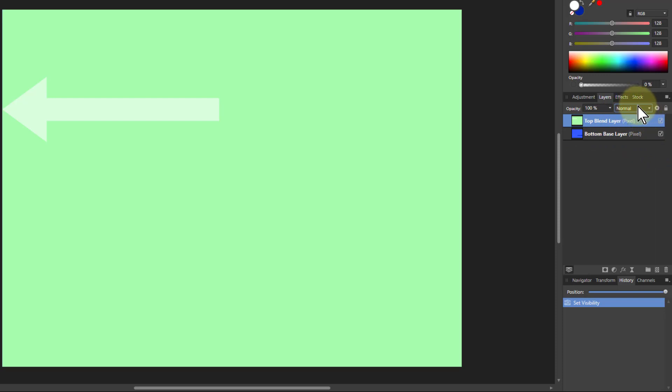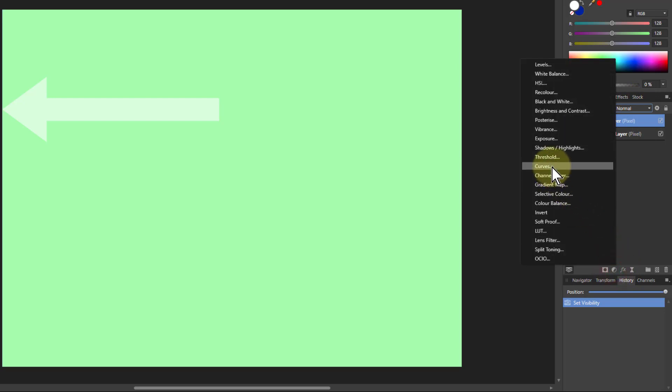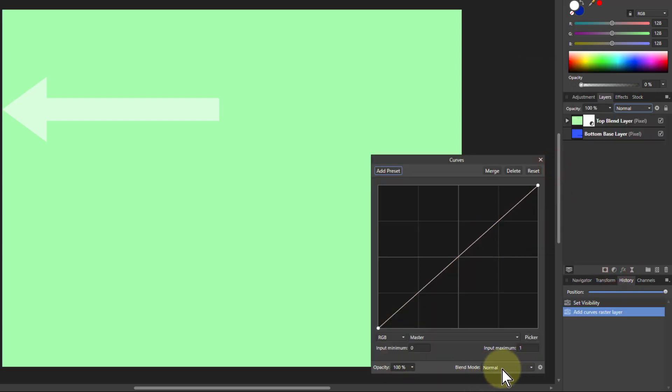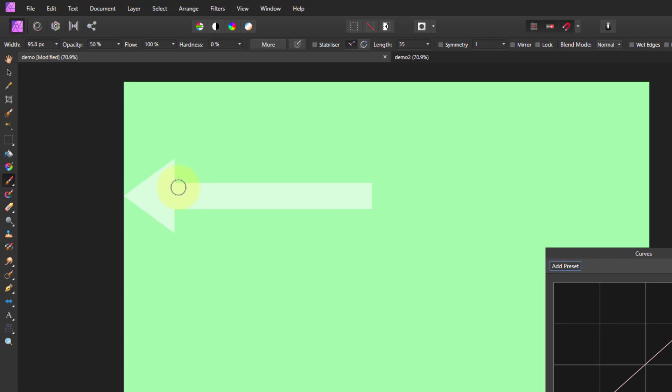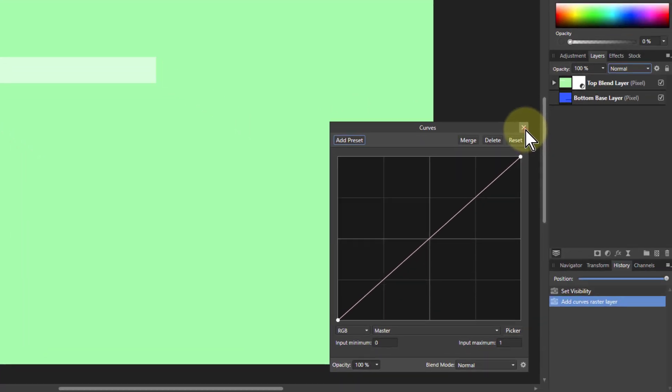So for example, if I take adjustments and do curves, there's a blend mode down here. And if I'm using a paintbrush, like over here, then there's a blend mode up here. So I can paint with the blend applied at the same time.